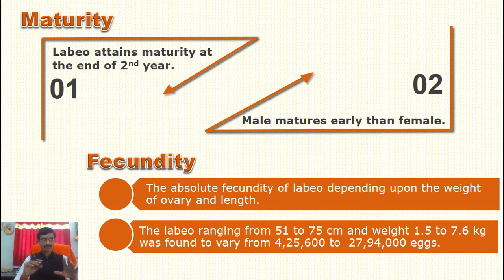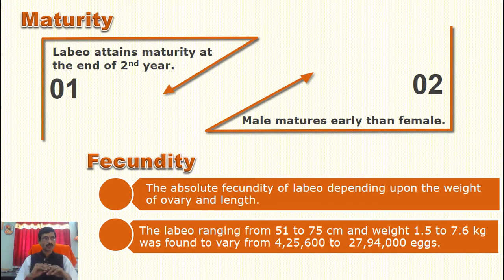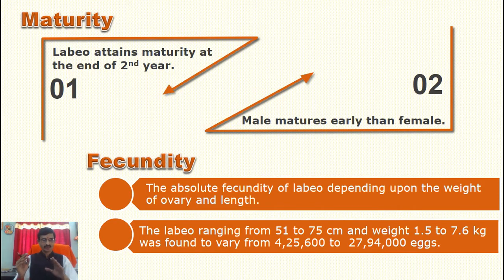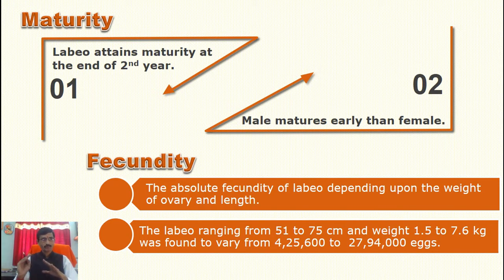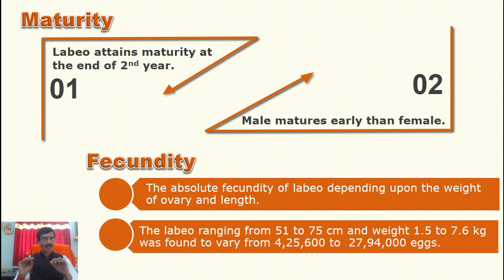The next concept is fecundity. Fecundity means the number of eggs laid by a female fish per gram of its body weight. The absolute fecundity of Labeo depends upon the weight of the ovary and the length of the fish. For Labeo ranging from 51 to 75 cm in length and 1.5 to 7.6 kg in weight, the fecundity varies from 4,25,600 to 27,94,000 eggs.